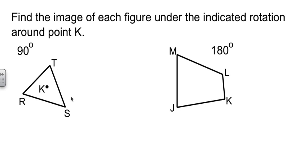Our job is to find the image using the indicated rotation around point K. Point K is our center point. They're asking us to rotate it 90 degrees, 90 degrees counterclockwise. So, from here, kind of guesstimate. We're going to estimate somewhere in there. Somewhere in there.